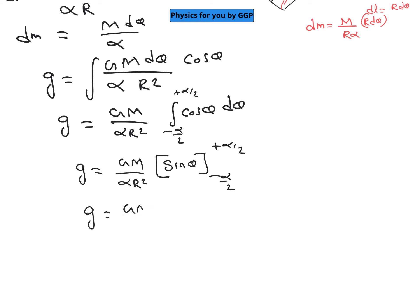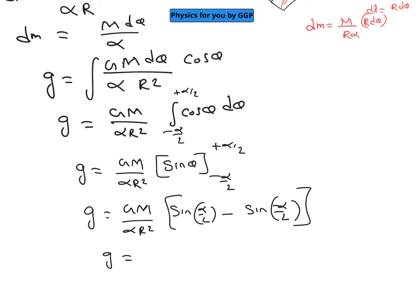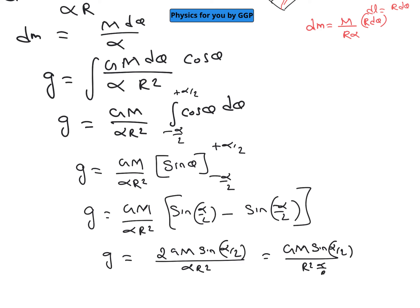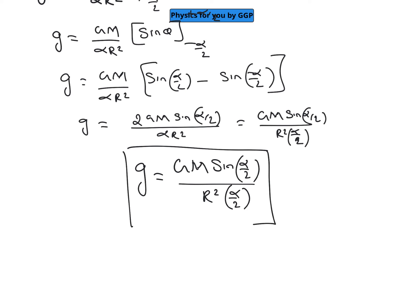Putting in the limits gives Gm / (α·r²) times [sin(α/2) − sin(−α/2)]. Since sin(−θ) = −sin θ, this becomes 2·sin(α/2). Therefore, the net gravitational field is G = 2Gm·sin(α/2) / (α·r²), or equivalently G = Gm·sin(α/2) / (r²·(α/2)). This is the formula for the gravitational field at the center of a circular arc of mass m, radius r, and total angle α.